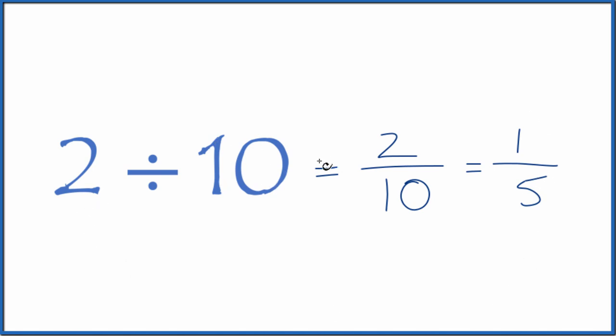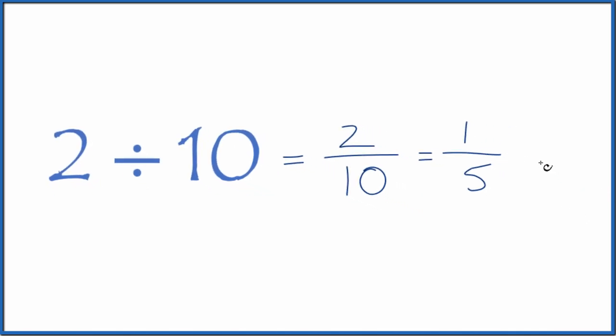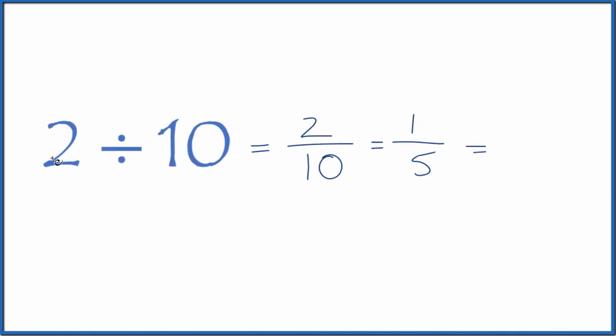So 2 divided by 10, that's equal to the fraction 2 tenths or 1 fifth. You could also just do this on your calculator. You could divide 2 by 10, and you would end up with 0.2. If you divided 1 by 5, you'd also get 0.2, since these are equivalent.